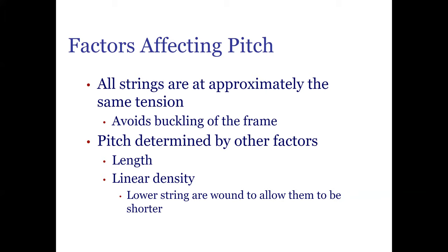The higher mid-range to high strings are essentially the same piano wire at different lengths, but for the lower mid-range to the bottom of the keyboard, linear mass density must also increase. They achieve this by winding the strings with wire — likely silver — which raises the linear mass density and pulls the frequency down to where it needs to be.